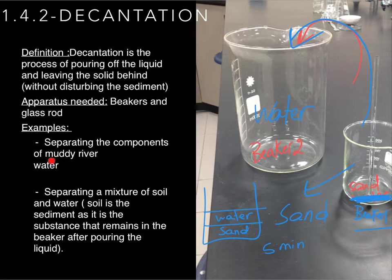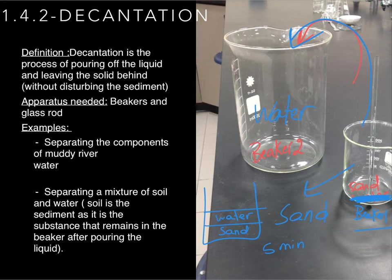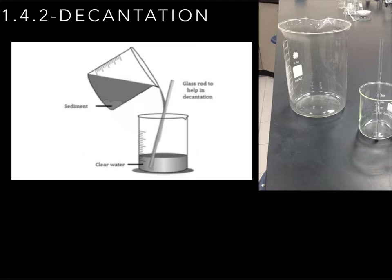An example is separating the components of muddy river water. All you need is beakers and a glass rod to help separate the particles of sand and water. What is left at the end — the substance remaining in the beaker after pouring off the liquid — is called sediment. This diagram shows water being poured off into a second beaker, with the glass rod assisting and the sediment remaining in the first container.